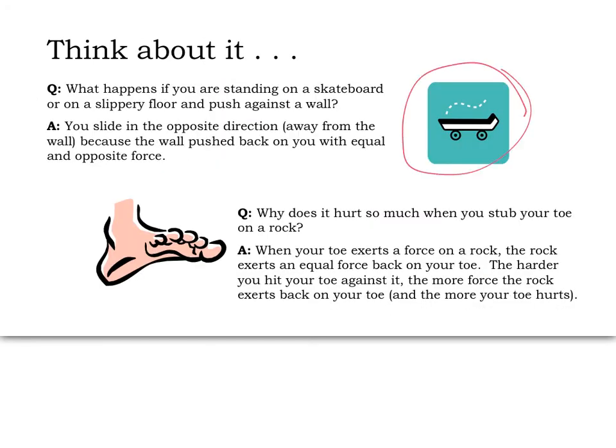Let's do some more examples to get a better idea. Let's think about this, like a skateboard. Question: what happens if you're standing on a skateboard or even on a slippery floor and push against the wall? We already know the answer, right? You push against the wall and you slowly start to go backwards, away from the wall. Why? Well, that's because the wall pushed back on your hand with the same amount of force. So if you pushed with 20 newtons of force against the wall, the wall pushed back with 20 newtons of force. That's what third law is all about.